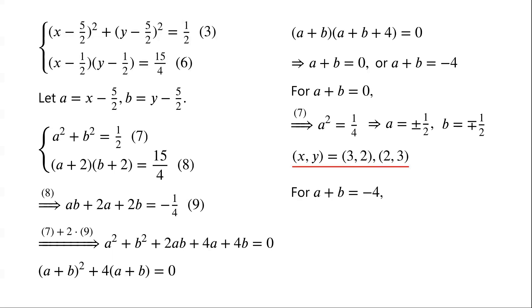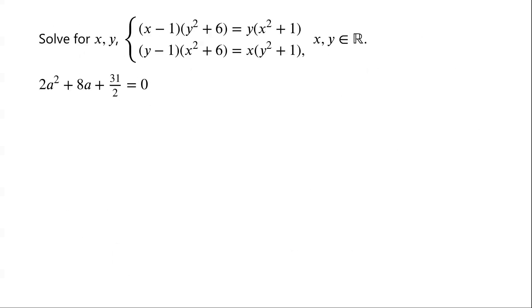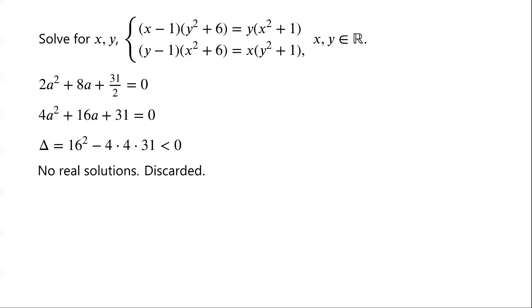For A + B = −4: from equation 7, we have A² + (−A − 4)² = 1/2. Simplifying, we get 2A² + 8A + 31/2 = 0. Multiplying by 2: 4A² + 16A + 31 = 0. The discriminant of this quadratic equation equals 16² − 4 × 4 × 31, which is less than 0. So the equation has no real solutions.